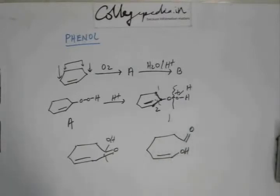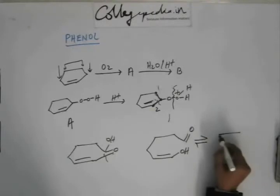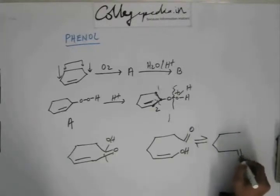Look at this. This is enol, this is alcoholic group and this is enolic group. Can you identify that this is an enolic form? This will quickly, very quickly tautomerize to keto and this enolic form will be converted into ketonic group.